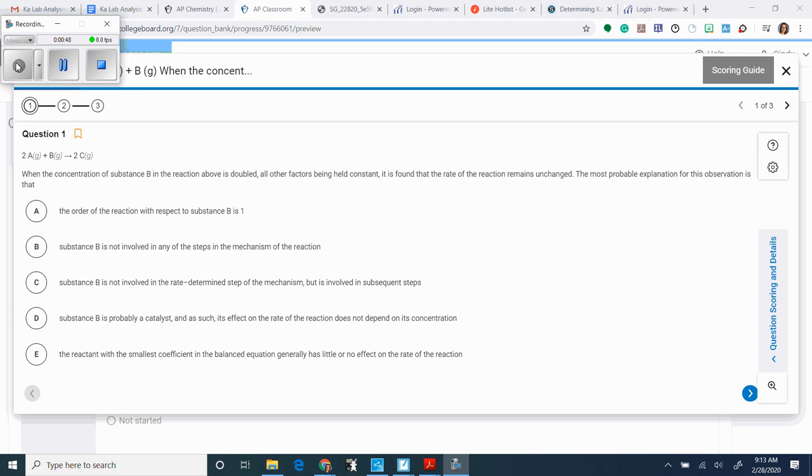If we take a look at that, you have to read the words really carefully. It says when the concentration of substance B in the reaction is doubled, so in my brain I see just adding a big scoop of it in there. All other factors being held constant, it is found that the rate – rate means how fast it's happening – is unchanged. So that means it doesn't matter if I add more of it, it didn't make it go faster.